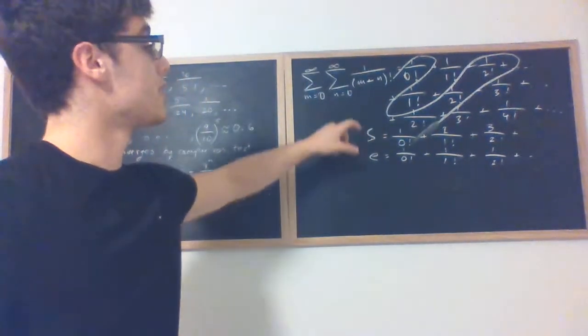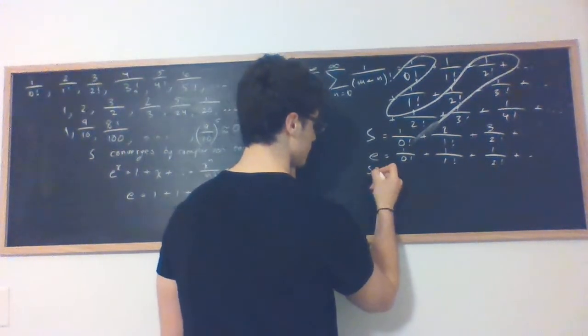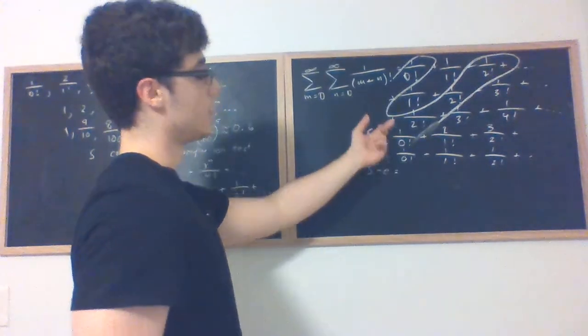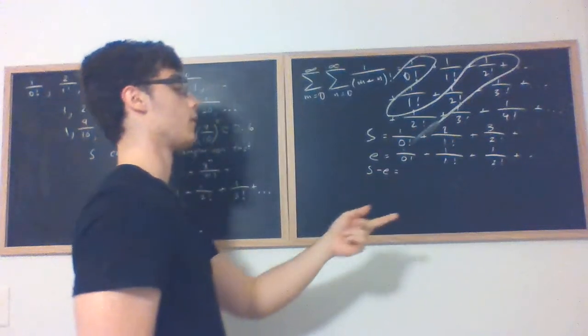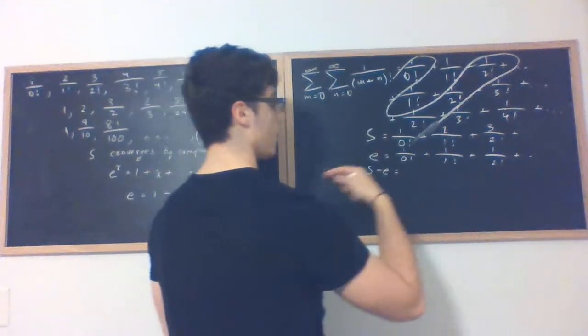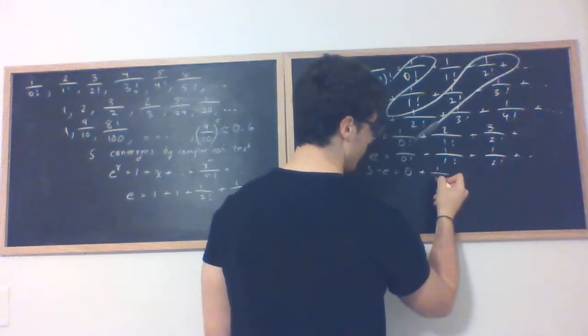Now, what we could do is we could subtract these two convergent series to yield another convergent series s minus e. And we're going to get 1 over 0 factorial minus 1 over 0 factorial is going to be 0. 2 over 1 factorial minus 1 over 1 factorial is going to be 1 over 1 factorial. And the result is going to be 0 plus 1 over 1 factorial.